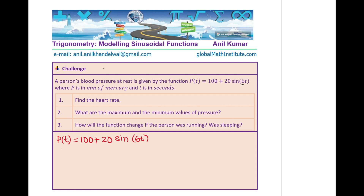Since we need to find the heart rate, let's find the time period, which is related to the coefficient of t, which is 6. The time period T = 2π/6 = π/3. We can find this value using the calculator: π divided by 3 is approximately equal to 1.05 seconds, rounding to two decimal places. So that becomes the time of one pulse.